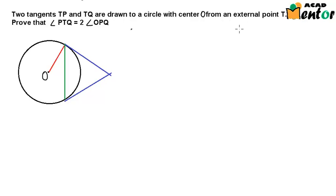Now it also says that two tangents are drawn from an external point T. So this point here can be point T and there are two tangents TP and TQ. This could be P and this could be Q drawn from point T.